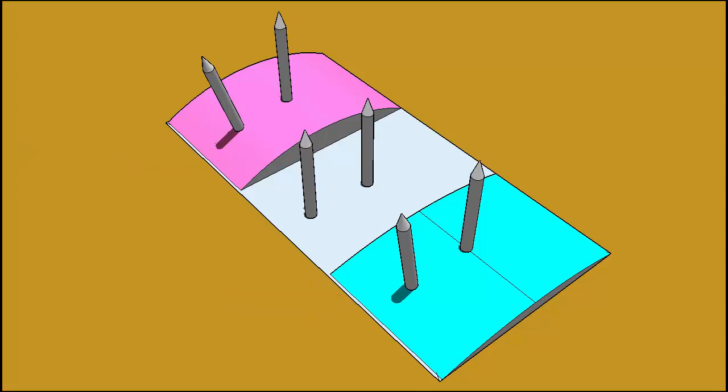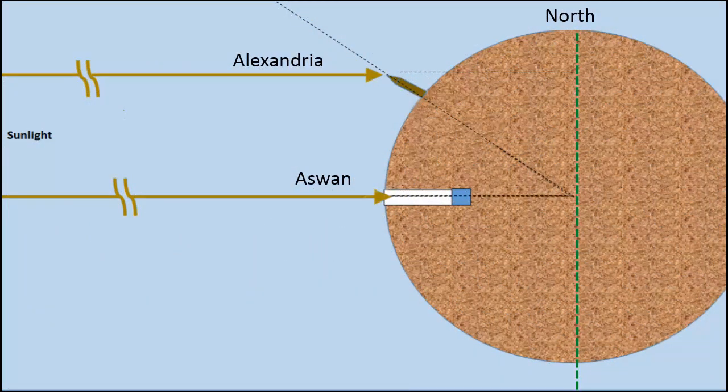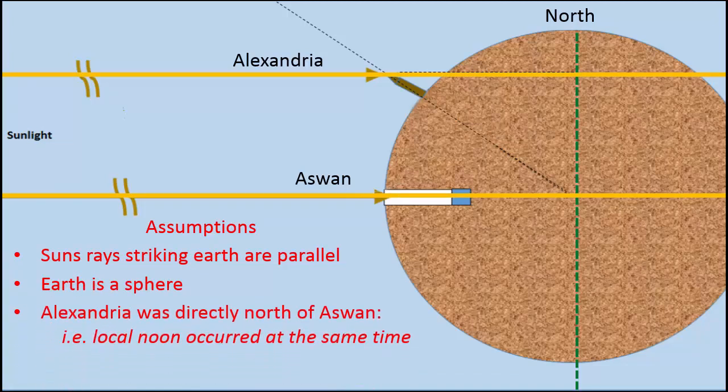This was a key clue for Eratosthenes, and he started drawing models of the sun, the well, and the earth to see what's up with that. He put together the following model, which is key to understanding his famous experiment. The model makes four key assumptions. First, the sun's rays at Aswan and Alexandria are parallel. The earth is a sphere. Alexandria was directly north of Aswan. That is, local noon occurs at the same time. Lastly, line segment AC transverses the two parallel rays. Let's look at these assumptions.